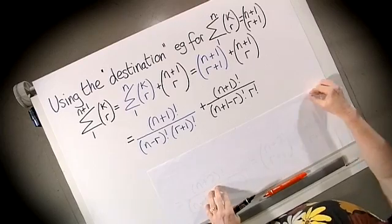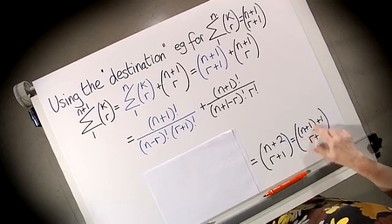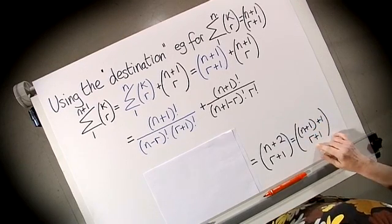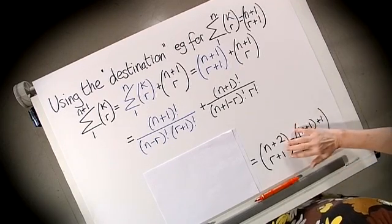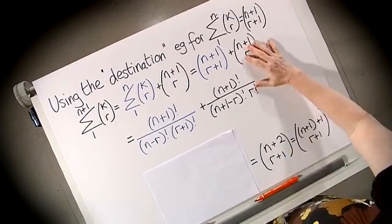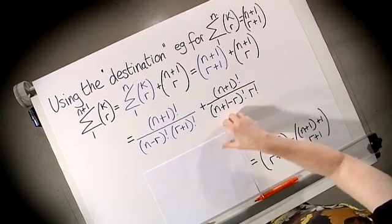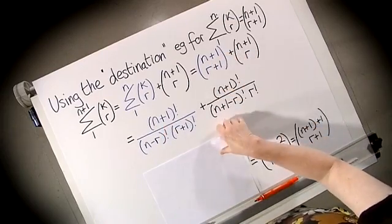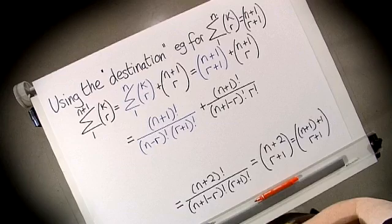So we can actually look at where we're going. We're heading for (N+1+1) choose (R+1) which is (N+2) choose (R+1). We relate the binomials. It's not very easy so we need to expand them into their factorials so here's the factorials for the two terms here and here's the factorial for this final term.